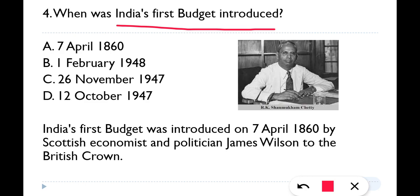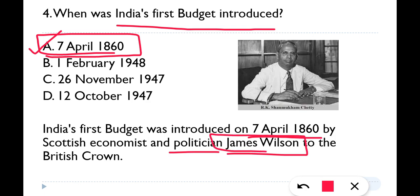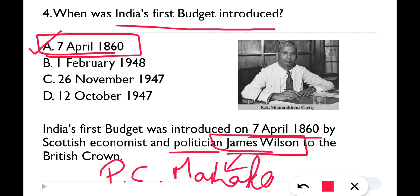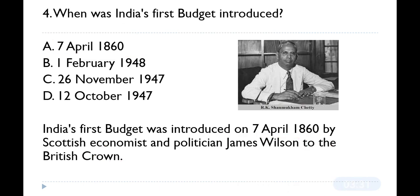When they ask about the first budget — not independent India's budget — the correct answer is 7th of April 1860, so option A is correct. India's first budget was introduced on 7th April 1860 by Scottish economist and politician James Wilson. James Wilson is also known as the Father of Budget.